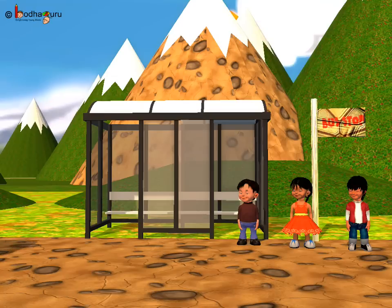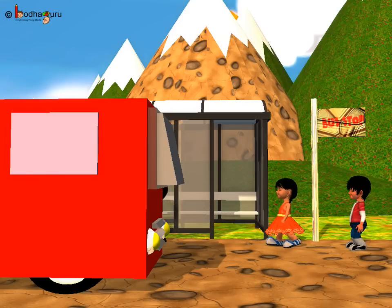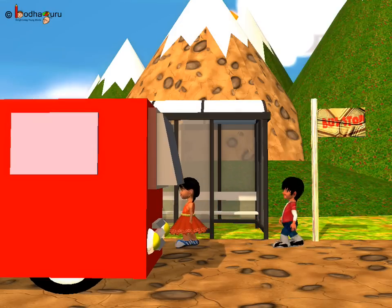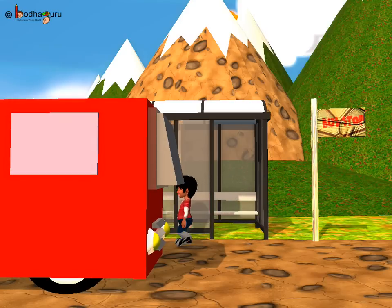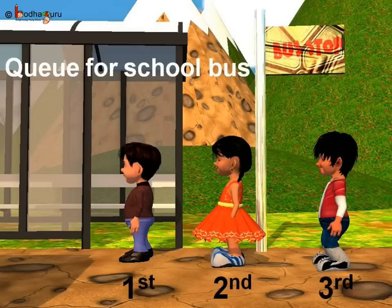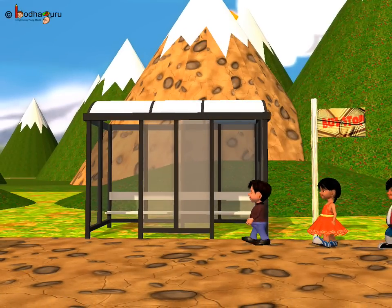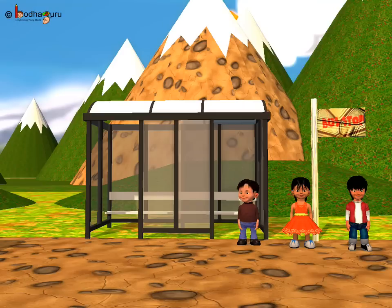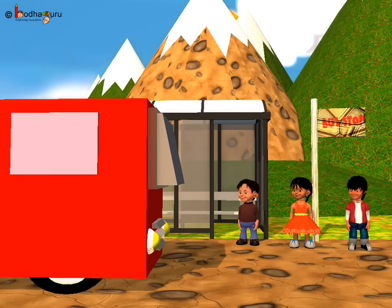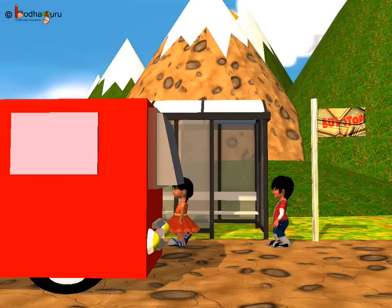Like here, how many children are there? Let us do the counting. 1, 2, 3. Three children are there — Anand, Khushi, and Aman. They are waiting in a queue for the bus. If we talk of the position, Anand is 1st in the queue and he will board the bus 1st. Same way, Khushi is standing 2nd in the queue and Aman is standing 3rd in the queue. In this way, ordinal numbers do not show quantity. They only show rank or position.